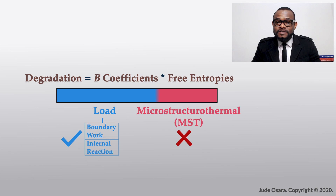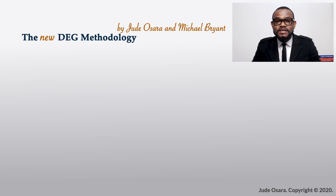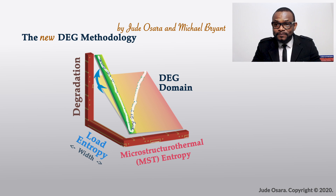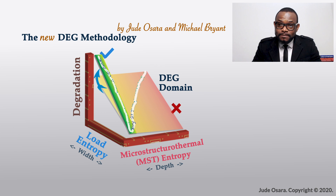All things in nature degrade spontaneously, so the goal is to slow down degradation, and to do this we need to minimize the MST component. Graphically, we have presented this information in the form of a three-dimensional orthogonal space we call the DEG domain. The height or vertical axis is the user-defined convenient degradation measure. The horizontal pair of axes consists of the load or boundary or output entropy defining the width, and the MST entropy defining the depth. Based on our discussion so far, we can infer that a relatively shallow DEG domain — meaning low MST entropy — is always desired for improved performance. Our studies show that these analysis features and result interpretations are consistent with all systems, thus forming the basis of the new DEG methodology.